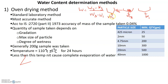For dry soil, the water content is determined by taking the weight of water divided by weight of solids. The weight of water is W2 minus W3, and the weight of solids is W3 minus W1, multiplied by 100 to give the water content as a percentage.